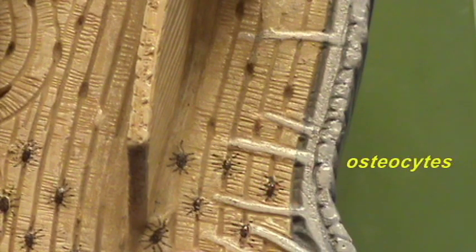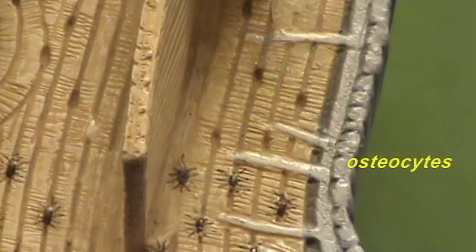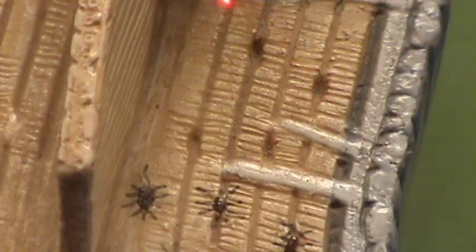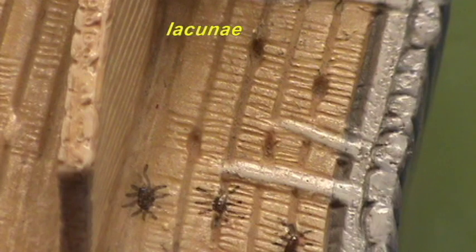These cells which are responsible for maintaining the bony tissue are referred to as osteocytes. These osteocytes are found in spaces which are referred to as lacunae. The lacunae is plural for lacuna.